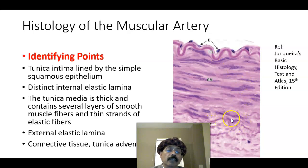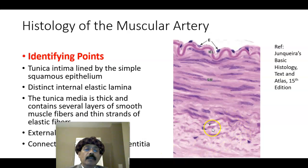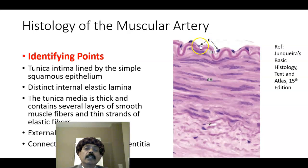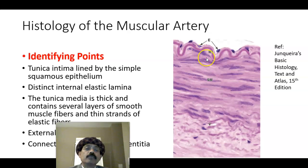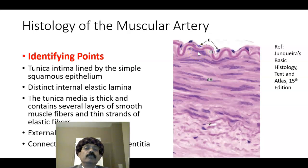We also have an external elastic lamina, which is indistinct in this slide, and the tunica adventitia, which contains the vasa vasorum, lymphatics, and unmyelinated nerves. The endothelial cells are simple squamous epithelial cells connected by tight junctions or occluding junctions. The endothelial cells have processes that go through the fenestrations of the internal elastic lamina and communicate with the smooth muscle by means of gap junctions.